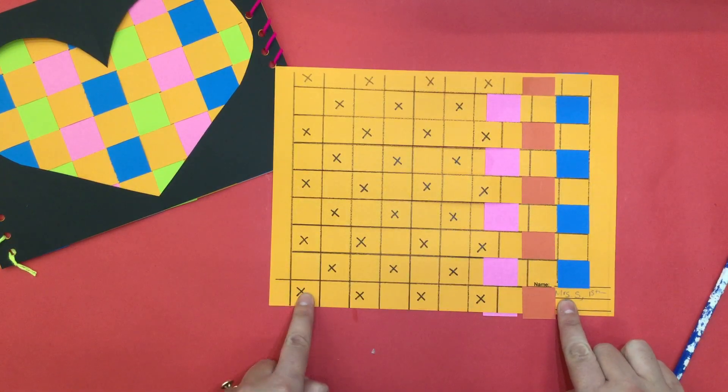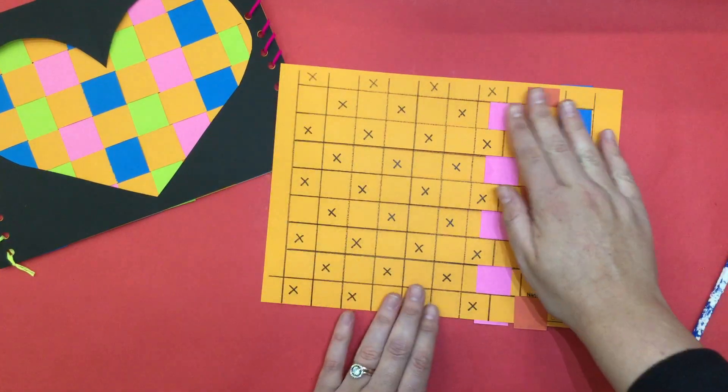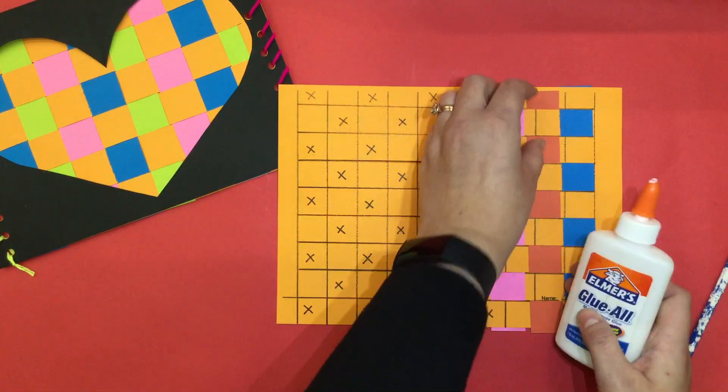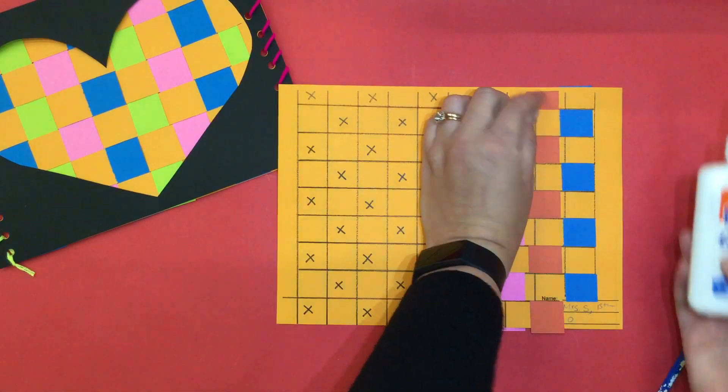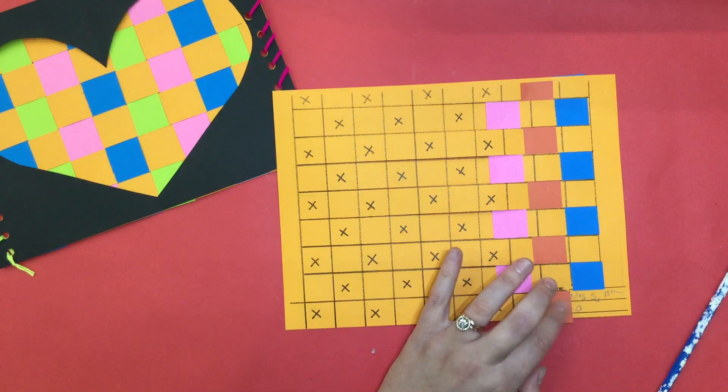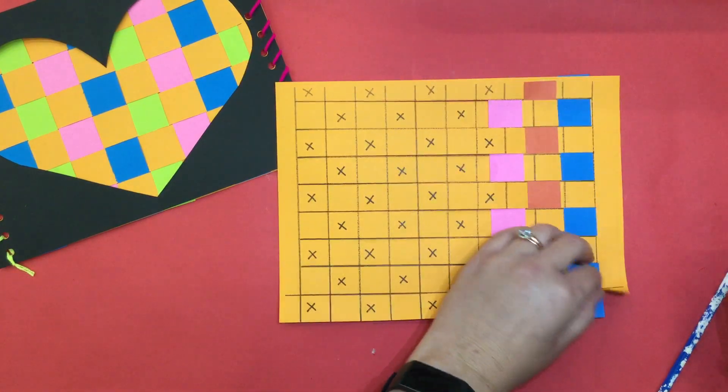Definitely mind these bottom two top strips. Make sure that you have those correctly placed as well. Once you've done that you can then take your glue and add just a dot of glue behind your strips to secure them in place, even the other side of your paper as well.